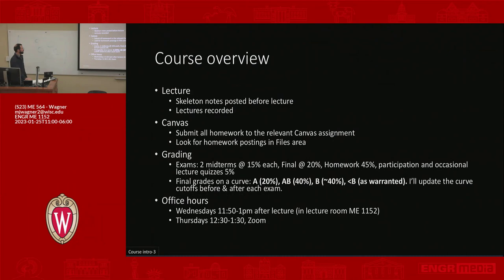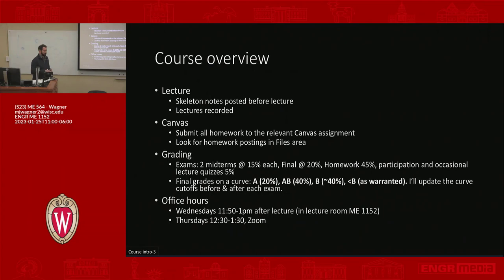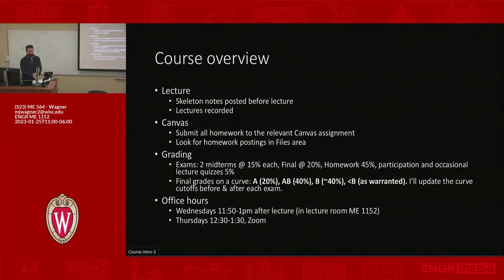Final grades — this is maybe the controversial part: the class is graded on a curve. About 20% A's, 40% B's. There are cases where somebody doesn't put in the effort and can get below a B. I'm not out to do that and I don't have a quota for below B's, but it's possible. What ends up actually happening is there are natural groups that form in the grades — I'll look at the first group of students, they're the A's; second group is AB, and so on. I'll update the curve cutoffs before and after each exam so you always know where you stand.